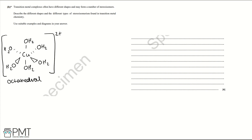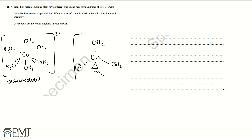Next, we draw a tetrahedral arrangement with water ligands, where we have four water ligands. Again, we draw it in 3D, making sure we bond to the oxygen and not the hydrogen. We use square brackets, but this time the charge is 2 minus. This arrangement is called tetrahedral.